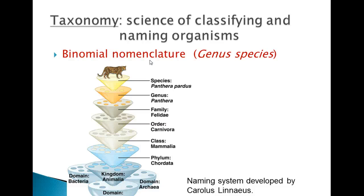As you can see here, the panther is in the domain eukarya because it's composed of eukaryotic cells, which are cells with a true nucleus. The panther is in the kingdom animalia for obvious reasons, it's an animal, not a plant or bacteria. It's in the phylum chordata because it has a backbone or cord that runs through the backbone, called the spinal cord.